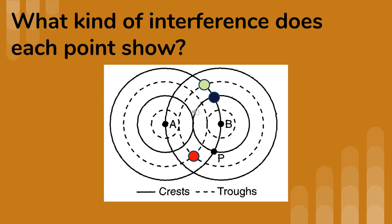The green dot shows a crest meeting a trough, so that's destructive interference. The black dot shows a crest meeting a crest — constructive interference. And the dotted meets the dotted, the trough meets a trough, so that is also constructive interference.